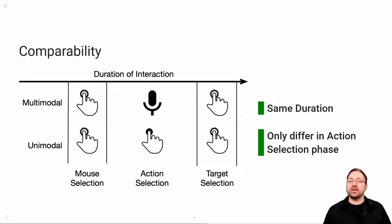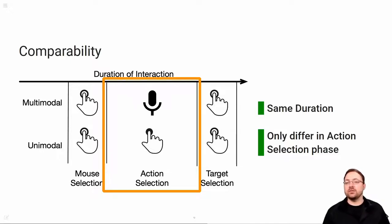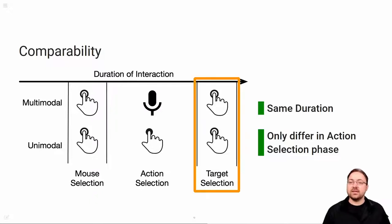We designed the interfaces to maximize comparability. We made sure that the duration of an interaction is approximately the same for both interfaces and consists of the same three phases. Both interactions start by selecting a mouse via touch. Then you use speech to specify the action in the multimodal interface, while you have to choose the respective action from a menu in the unimodal interface. The interaction concludes by touching the target position or object on the interactive surface. Thus the interfaces only differ in one aspect: the action selection phase, where the interaction is distributed to a potentially more suitable modality.